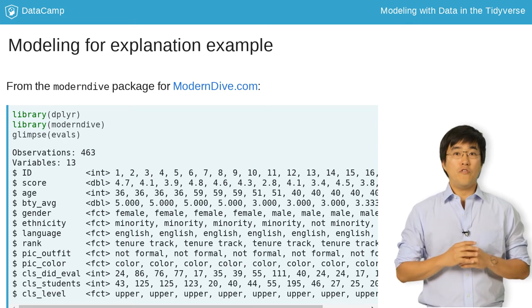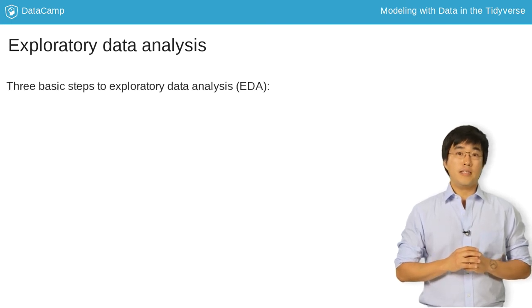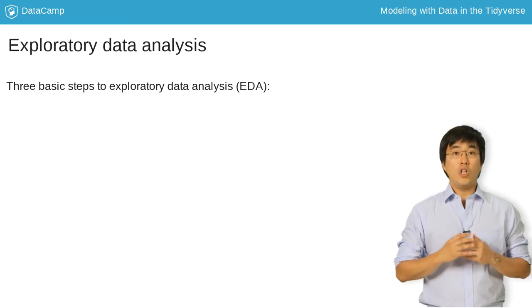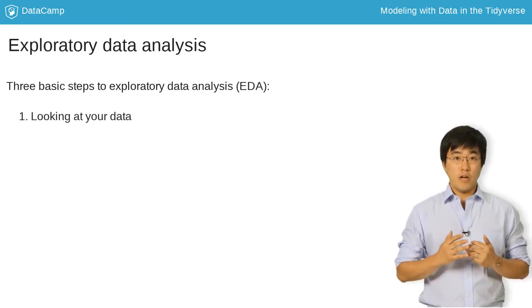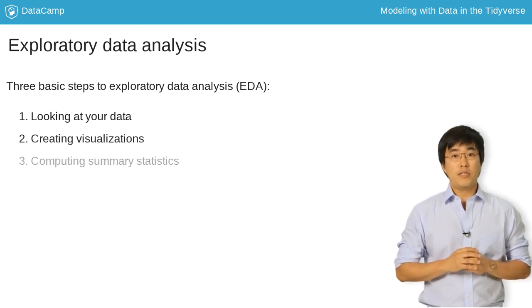A crucial first step is an exploratory data analysis or EDA. EDA gives you a sense of your data and can help inform model construction. There are three basic steps to an EDA: most fundamentally, looking at the data via a spreadsheet viewer or using glimpse as I did earlier; creating visualizations; and computing summary statistics. Let's do this for the outcome variable score.